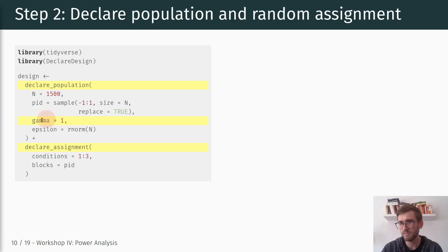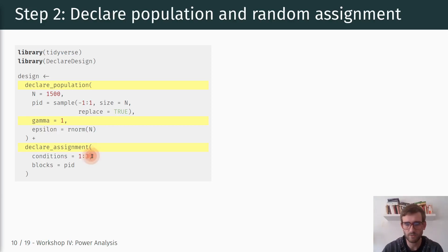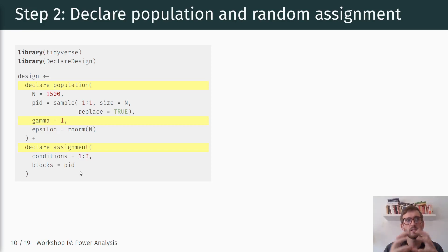We have our error term epsilon, which is just 1500 draws from a standard normal distribution centered at zero. So this declares the population — all the exogenous variables are in there. The second component is declaring the random assignment: the treatment conditions we're assigning. We have three different treatment conditions — one control, one positive, and one negative. Importantly, treatment assignment here is blocked by party identification, so randomization occurs within party identification blocks to increase power.